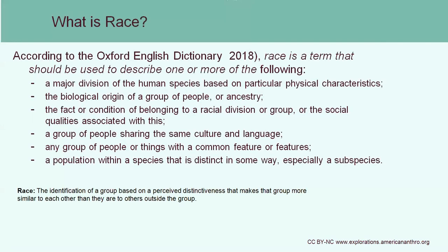So what actually is race? An important thing to understand about race is that it is a social definition, not a biological one. According to the dictionary, you can define race based on things like physical characteristics, the biological origin of a group such as their nationality, or different social qualities of that group, such as culture and language that they share in common, and values that they share in common.